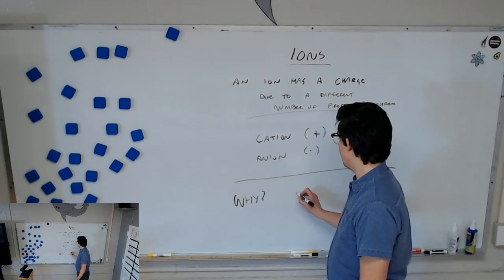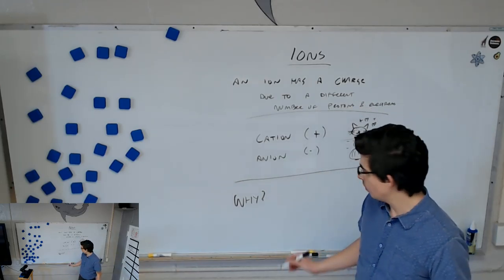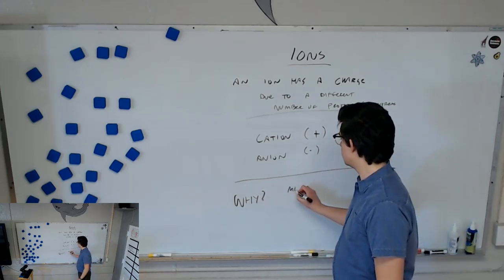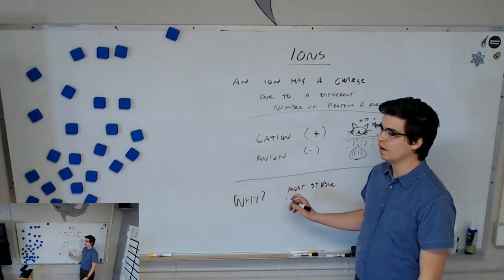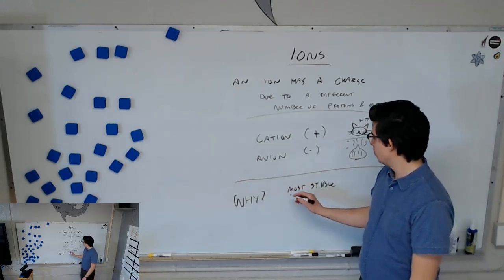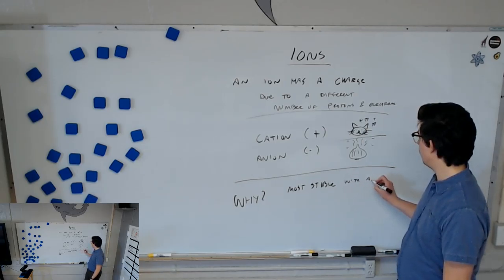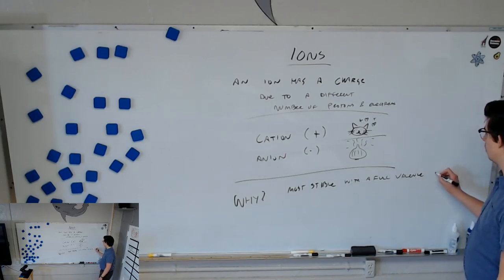Because they want a, yeah, usually, almost all of them, we say they want a, not one, but they're most stable, most stable. What are? So, atoms, well, atom or ions, are most stable with a full valence orbital. Let's put energy level.